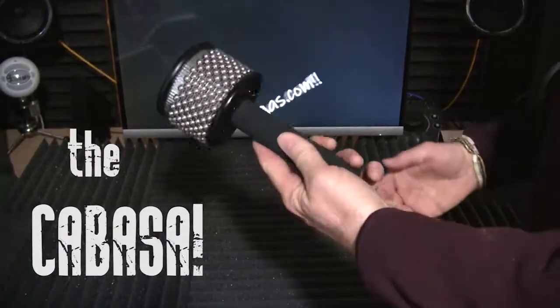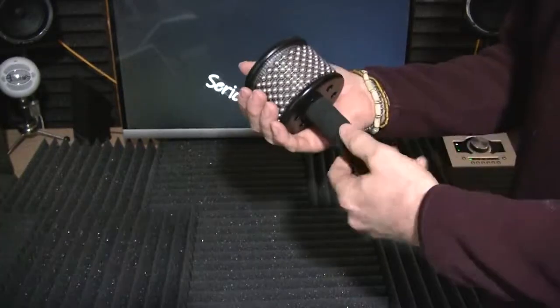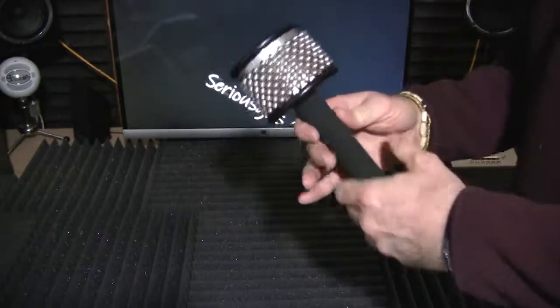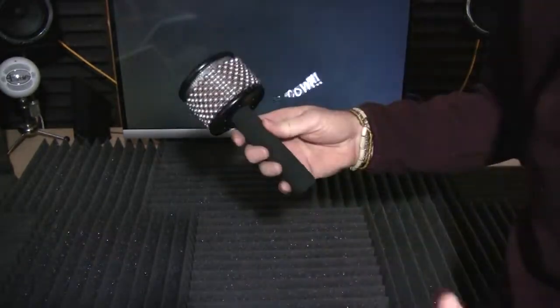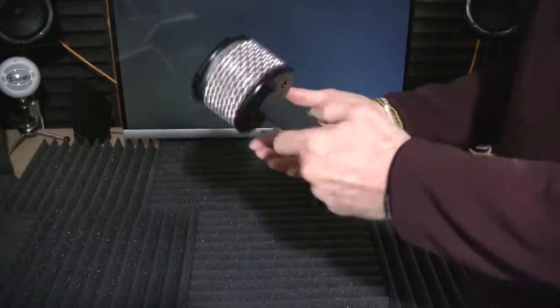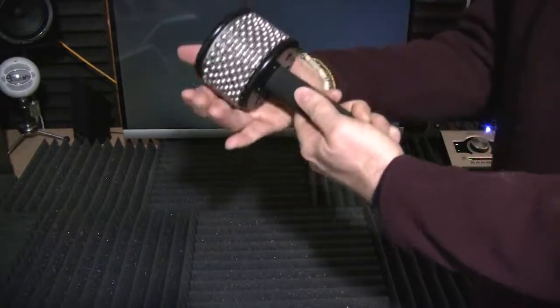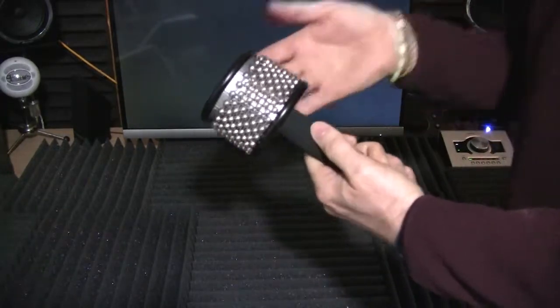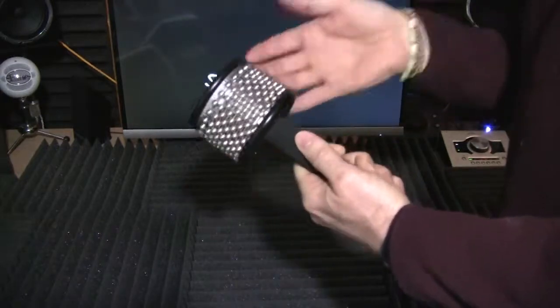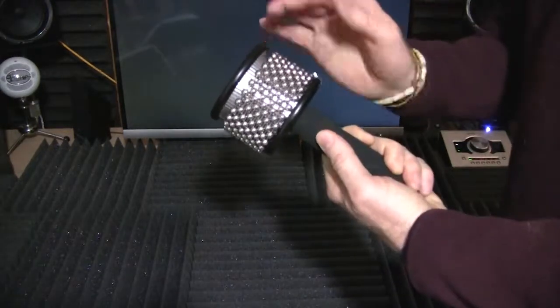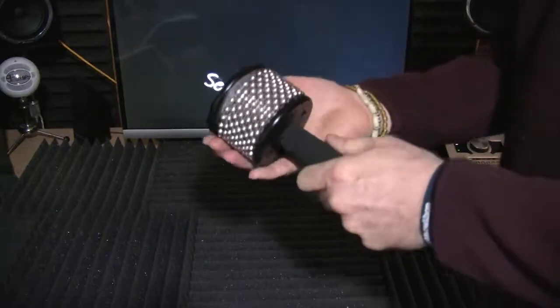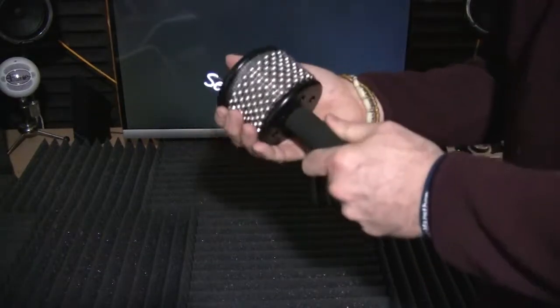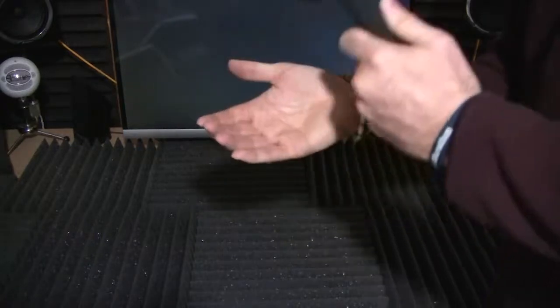A cabasa, staple in Latin rhythm playing. But hey, you don't have to use it just for Latin music. Any percussive piece you can use for anything, right? So if you slide these, it makes a grating sound against the aluminum. Steel balls against aluminum. Or if I just hit in my hand, it gives a slight tuck that is also good.